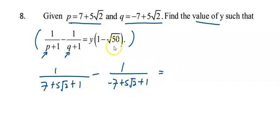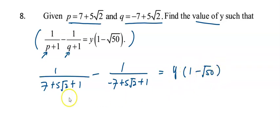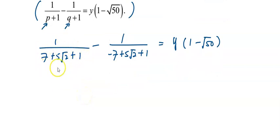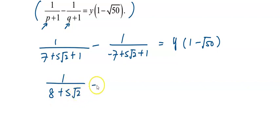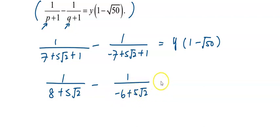And this is equal to y, which is 1 minus 3√2. After that I am going to simplify the denominator. I got 8 plus 5√2, minus 1 over negative 6 plus 5√2, equals 1 minus 3√2.